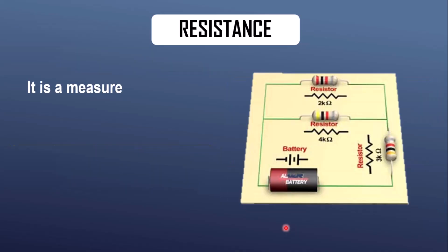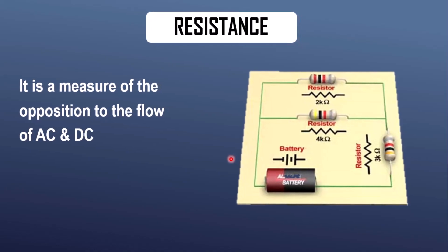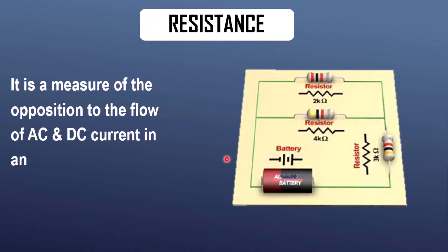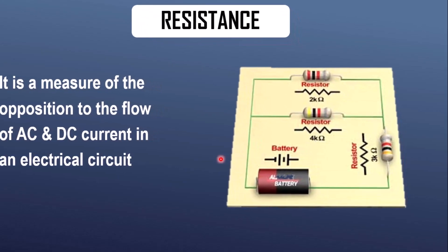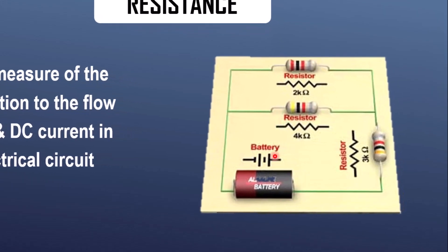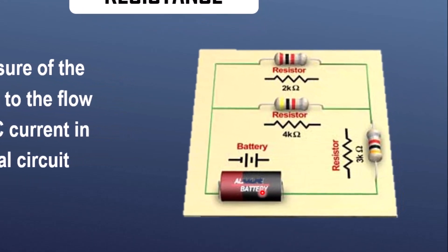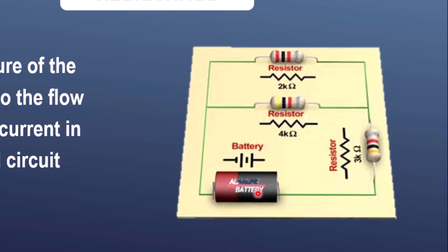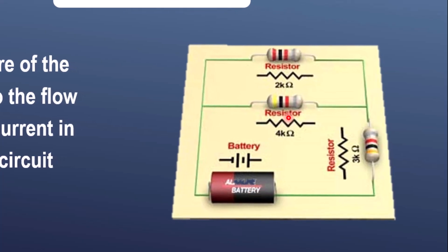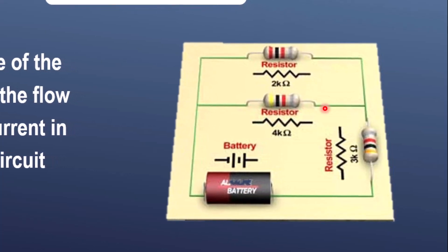Resistance is a measure of the opposition to the flow of AC and DC current in an electrical circuit. Here you can see a complete circuit in which there is a power source and the resistors are connected in series and parallel configuration to the power source.